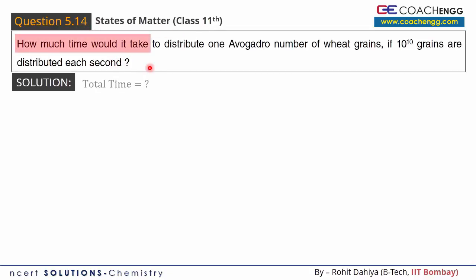How much time would it take to distribute one Avogadro number of wheat grains? The quantity of wheat grains is given: one Avogadro number, which is equal to 6.022 × 10^23.